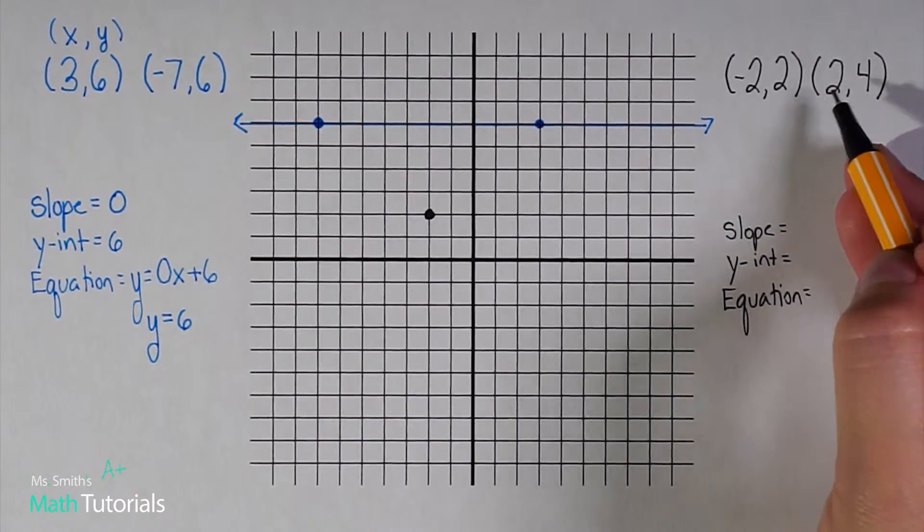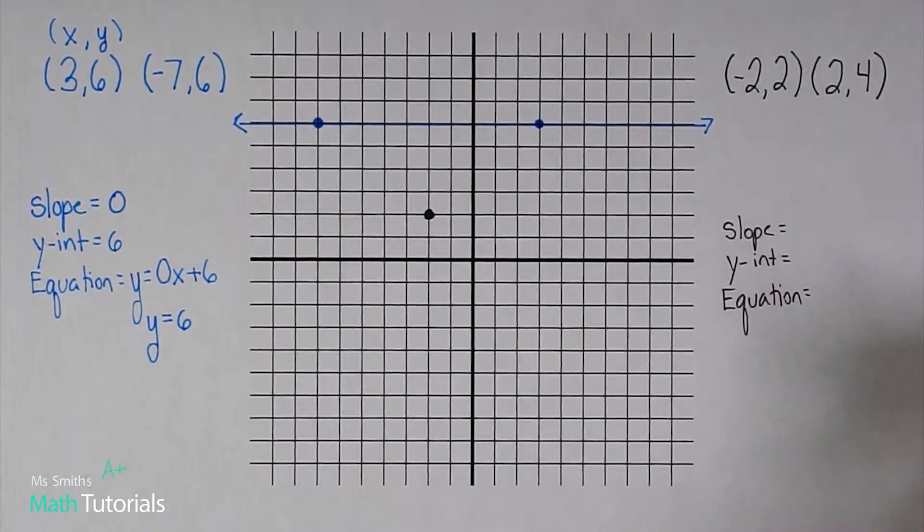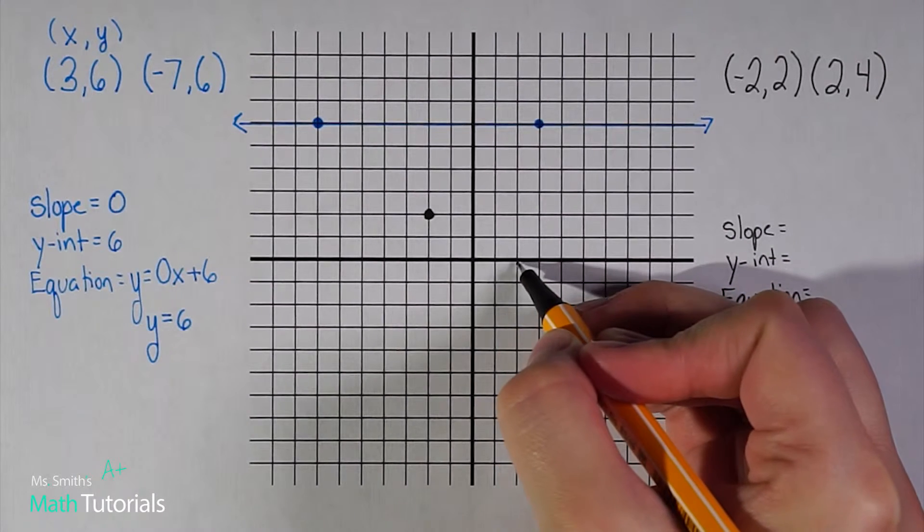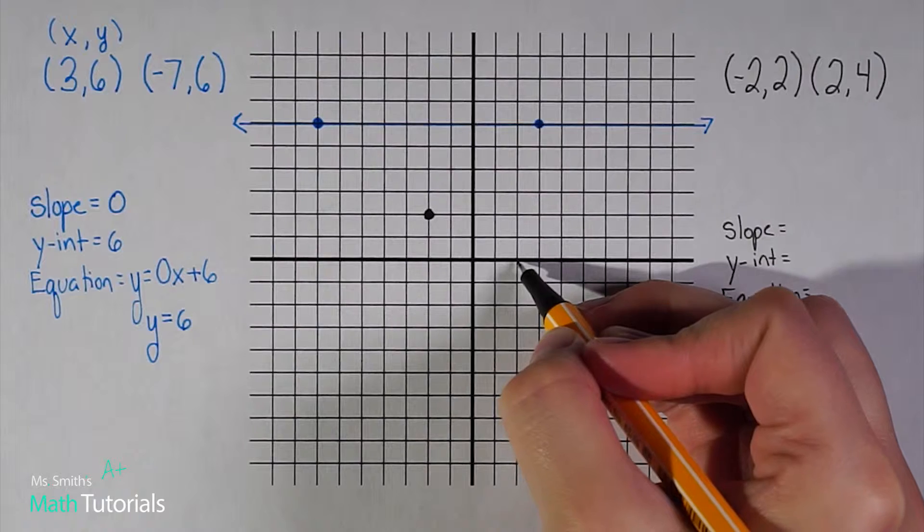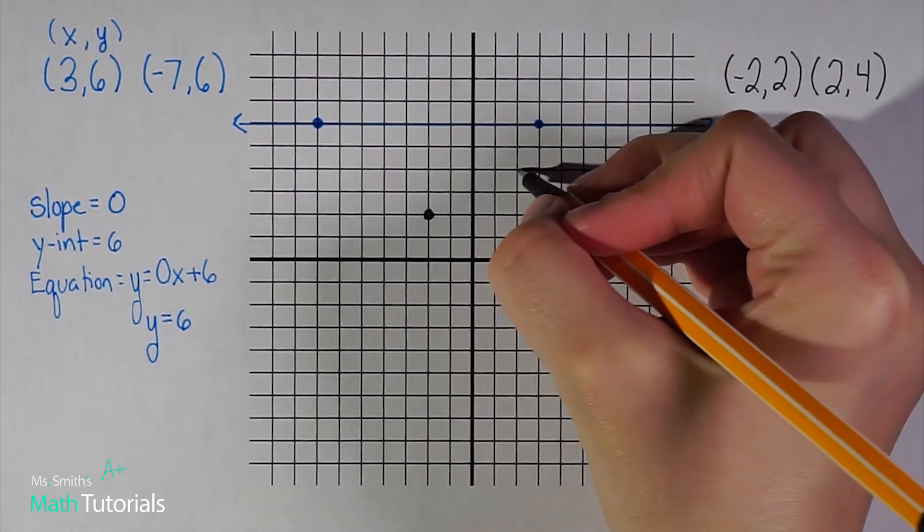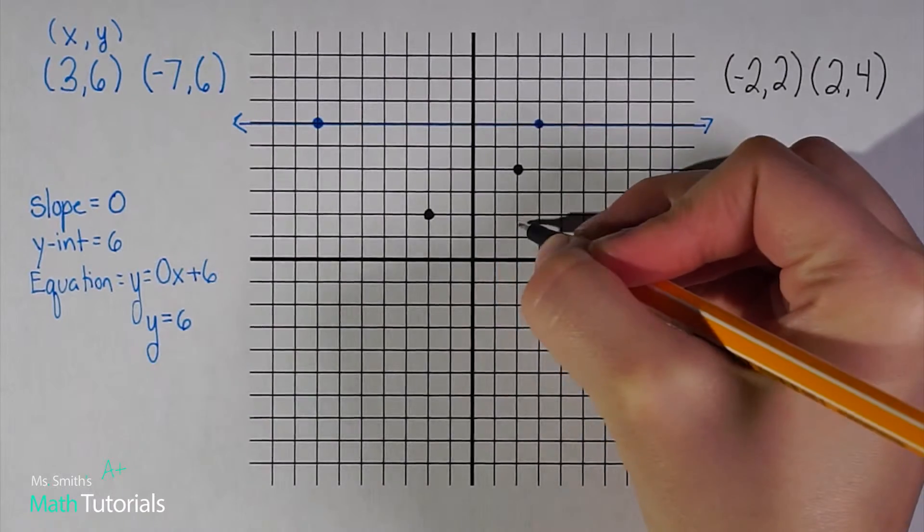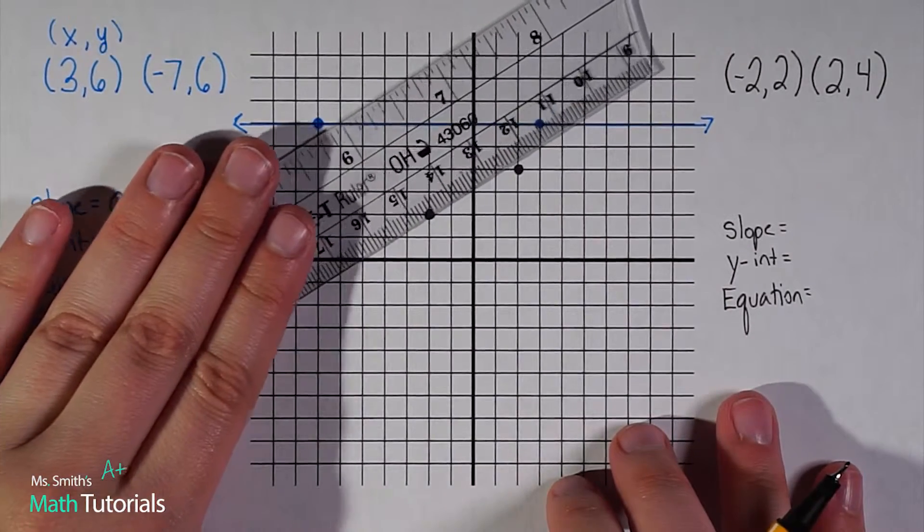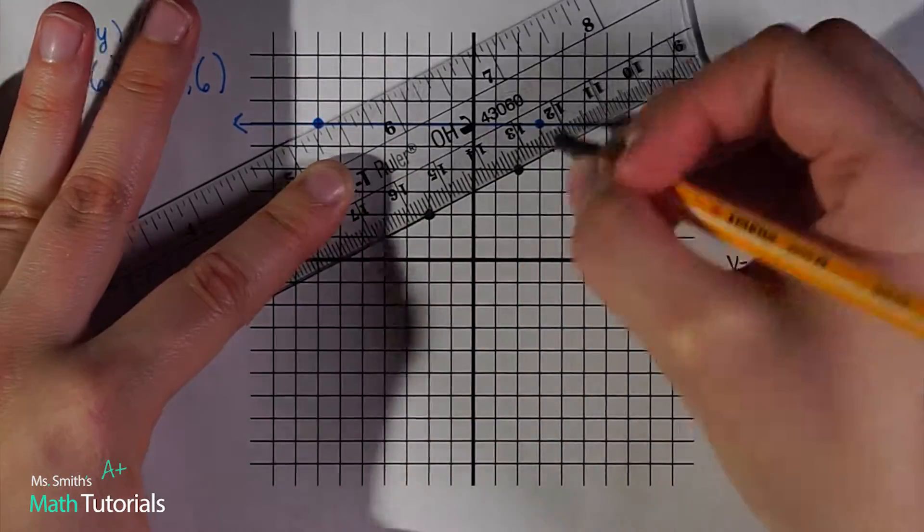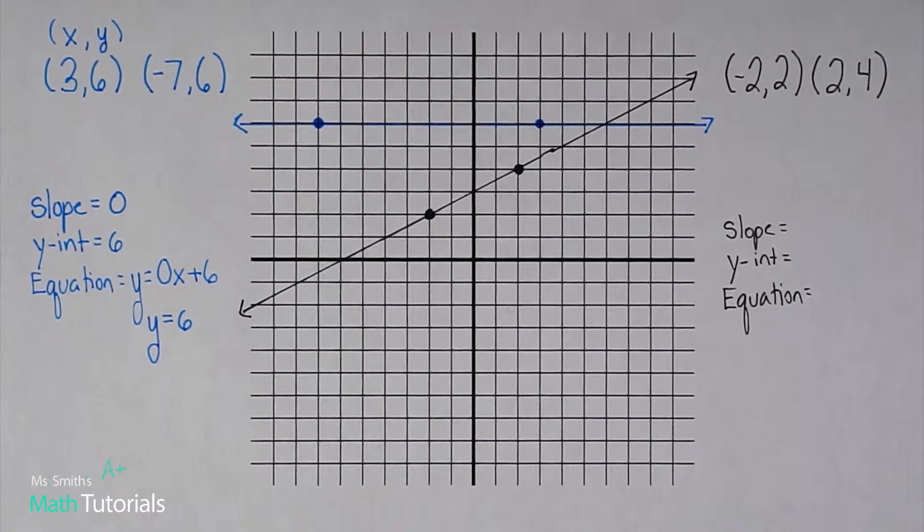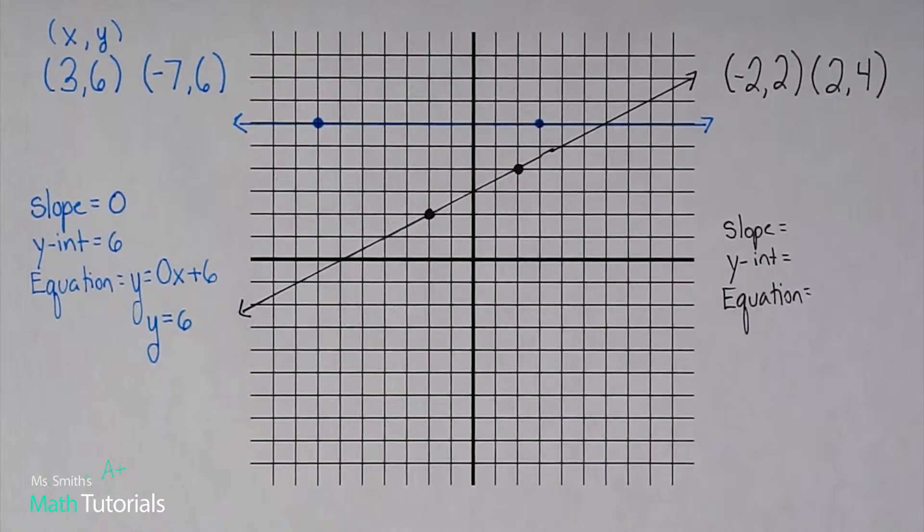Now let me grab my second point: positive two, positive four. That means I'm going to start back at the origin, one, two, and now I want to move up four on my y-axis: one, two, three, four. Since I was only given two lines, I'm going to connect these lines. I've now graphed this.